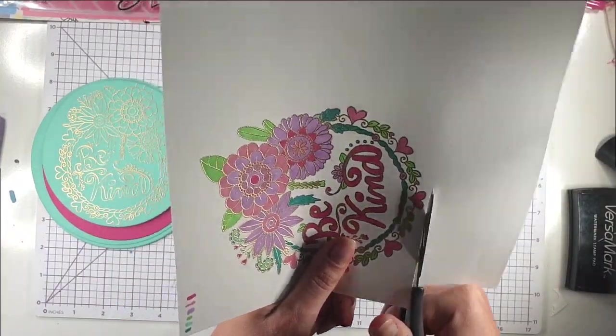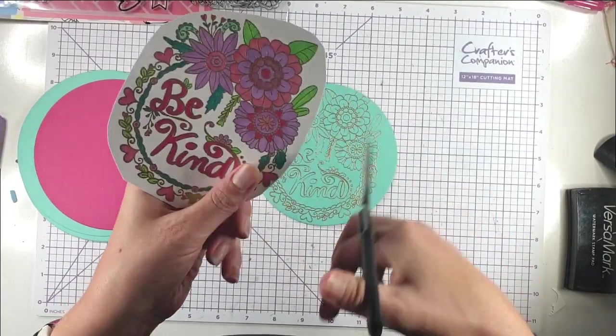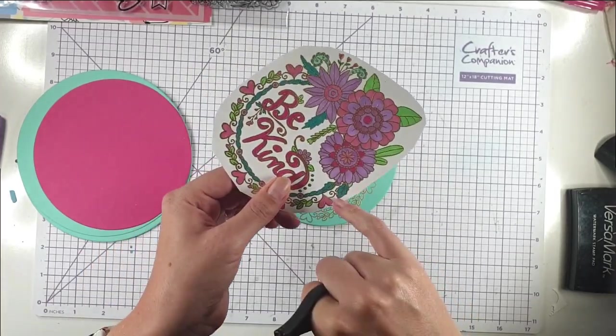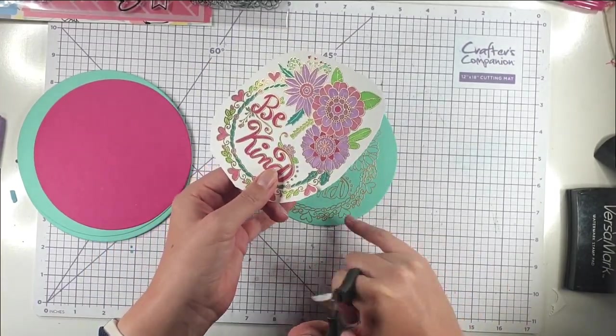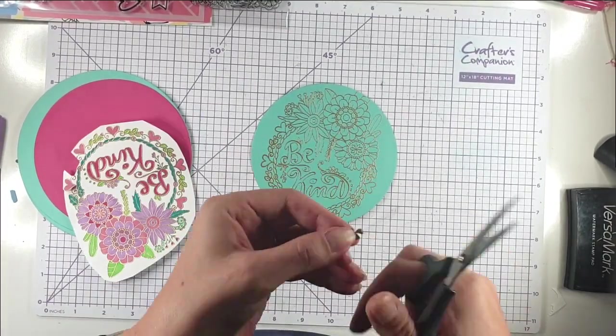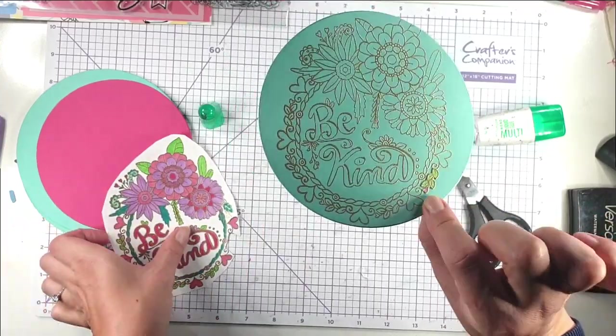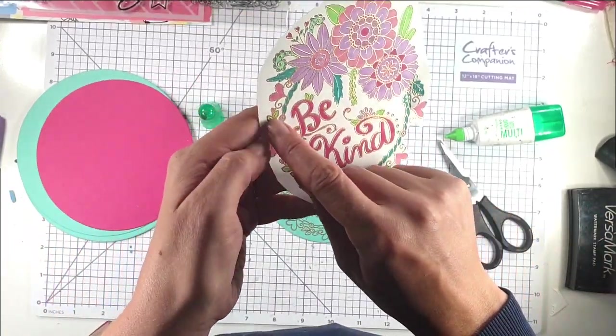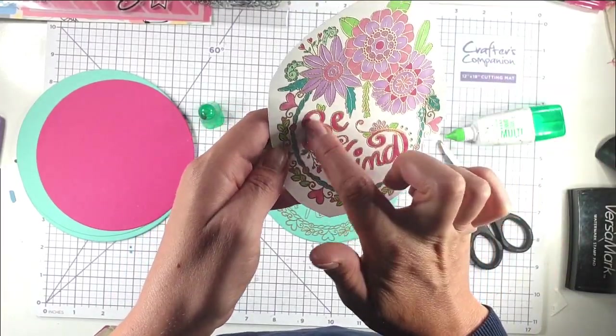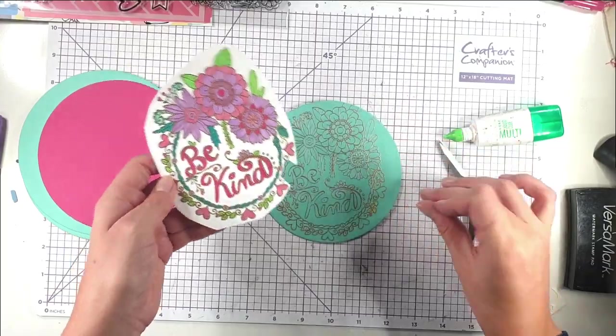I'm going to cut it out and then paper piece all of the cut pieces onto here. Each piece that I cut out, I'm going to glue on. Obviously I don't need to cut out these swirls because those are already on my base. All these pieces need to be cut out separately, but most of the rest can stick onto this ring as one big piece. Then I'll cut out the bee and the kind separately.